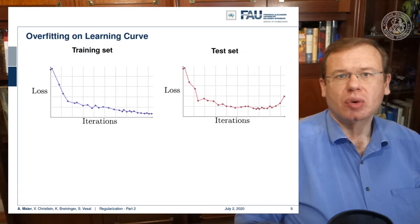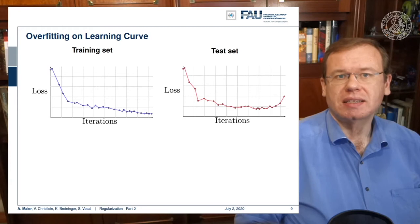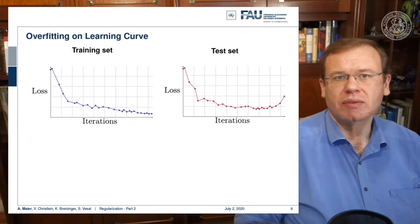What I want to show you here on the right hand side is the loss curve on the test set. You see that although the training loss goes down, the test loss goes up. At some point the training data set is overfitted and it doesn't produce a model that is representative of the data anymore.